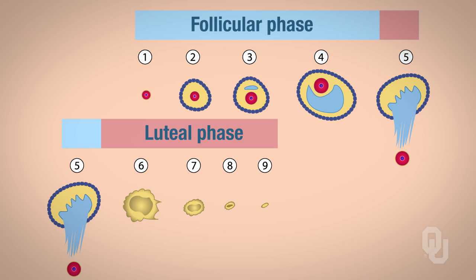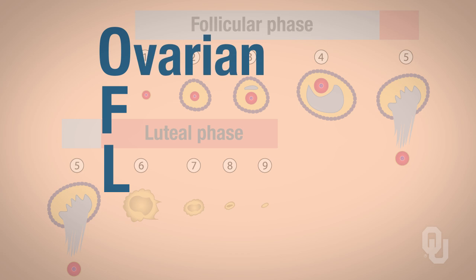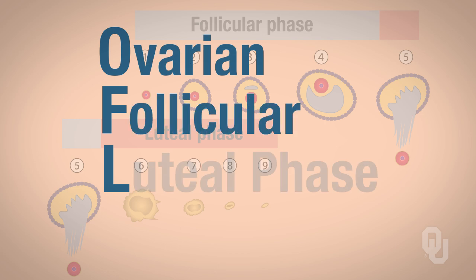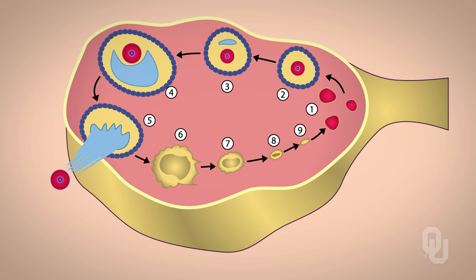The abbreviations are O-F-L: it's the ovarian, follicular, luteal phase. For the ovarian cycle, this diagram is going to be very important, and you want to have this diagram set aside while we're going through the next slide.